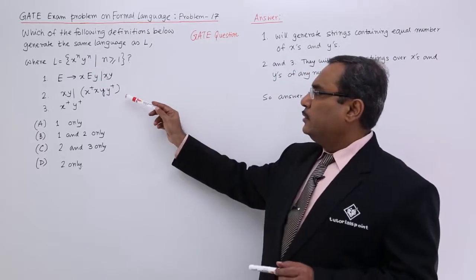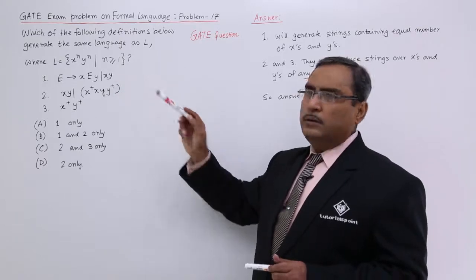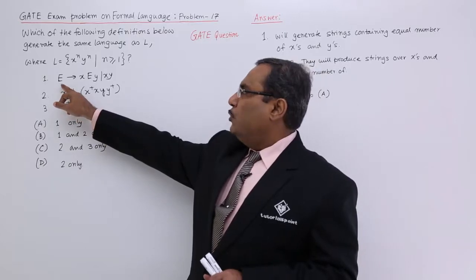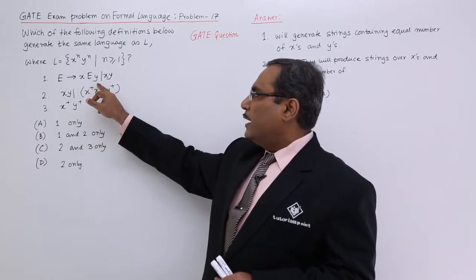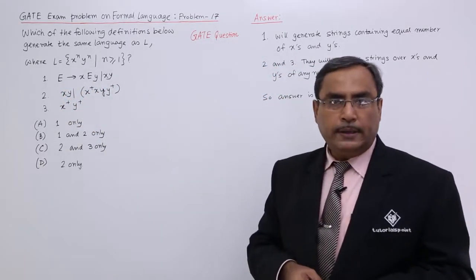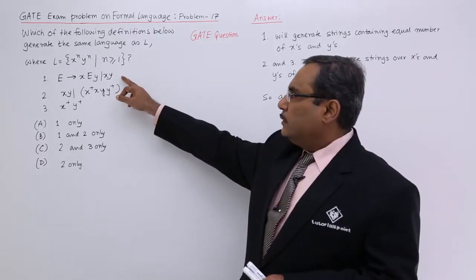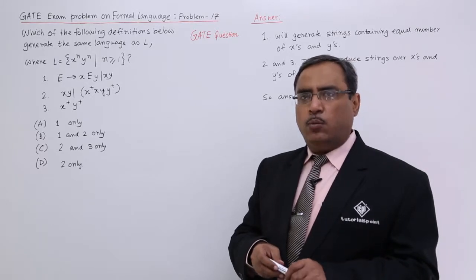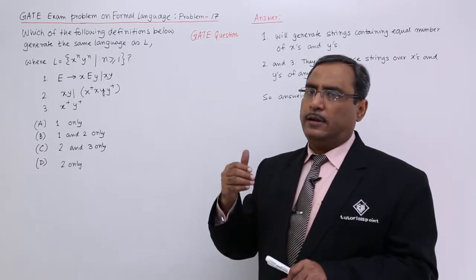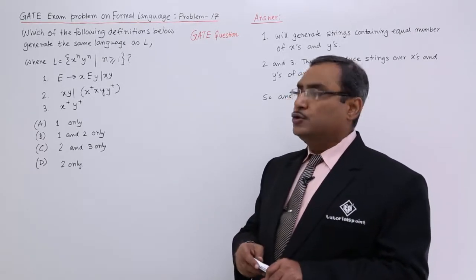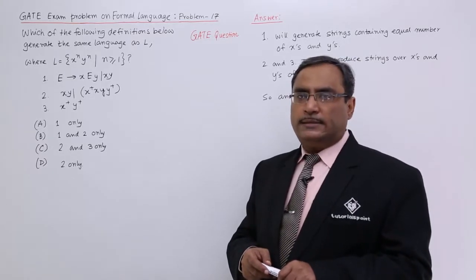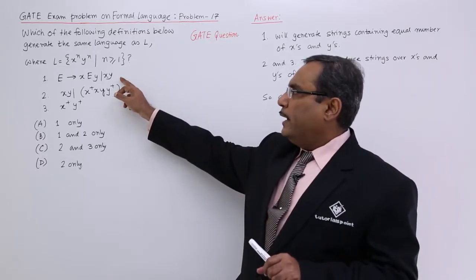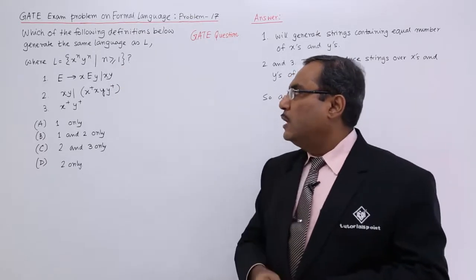Now, here they have given regular expressions and one production rule set. Look at the first one: E produces xEy or xy. I think this particular production rule ensures equal number of x and y in the terminated string, and also at least one x and at least one y has been assured. That is why it is quite in accordance with this particular language.